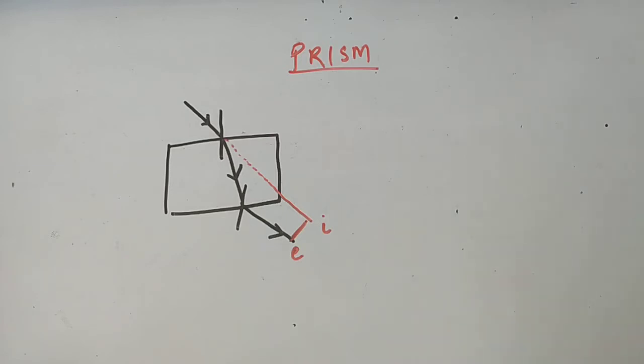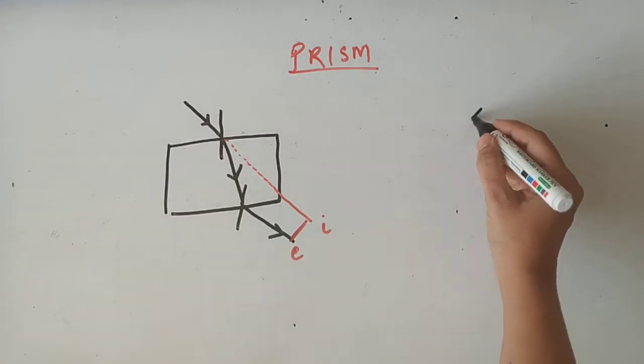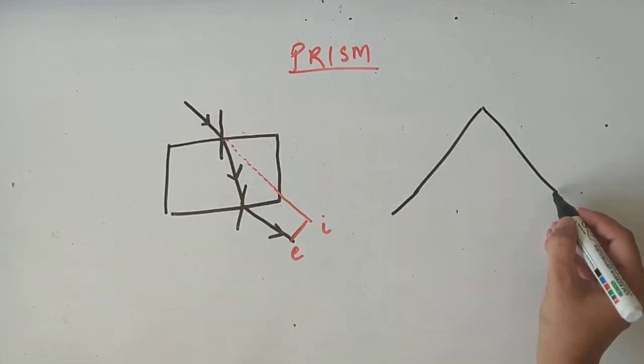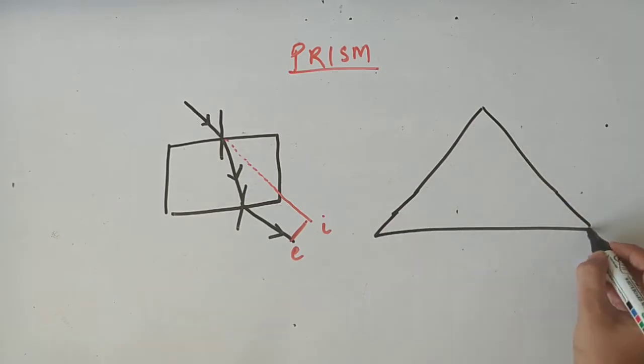Now we see what happens to the light ray when it passes through the prism. When the light ray passes through the prism, so this is the prism, the face of the prism.